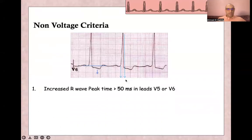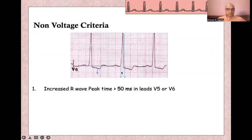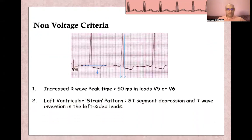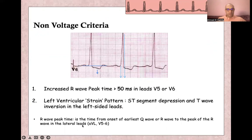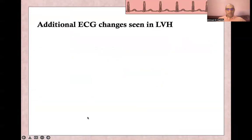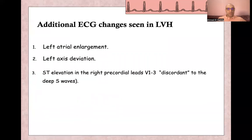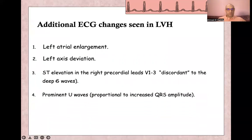For non-voltage criteria: increased R-wave peak time is calculated from the beginning of the QRS complex to the highest point, and it will be more than 50 milliseconds in V5 or V6. Left ventricular strain pattern is characterized by ST-segment depression and T-wave inversion in lateral leads V5 and V6. Additional ECG criteria include left atrial enlargement, left axis deviation, ST elevation in right precordial leads V1 to V3 (discordant to deep S-wave), and prominent U-wave proportional to increased QRS amplitude.